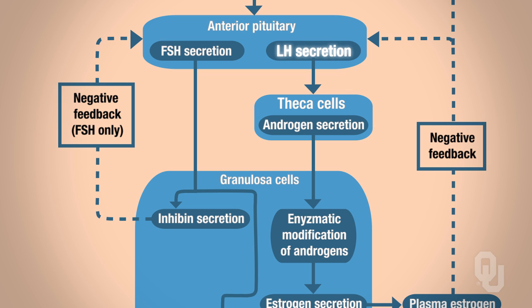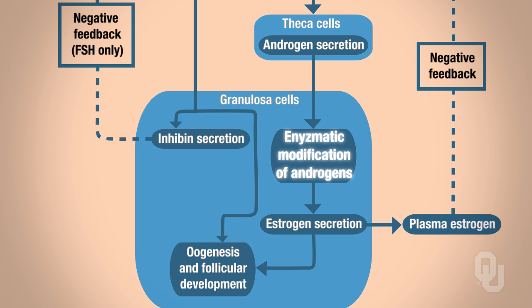Luteinizing hormone targets the thecal cells, which surround the follicle. The thecal cells synthesize and secrete androgens. Remember from Chapter 5, Figure 5.5, that steroid hormones are produced through a series of enzyme-catalyzed reactions — you don't need to memorize those pathways, just understand that these enzyme-catalyzed reactions give rise to estrogen, progesterone, and other steroid hormones. So we take these androgens, which are basically precursors, and enzyme-catalyzed reactions give rise to estrogen.